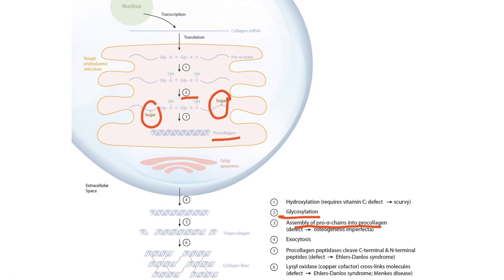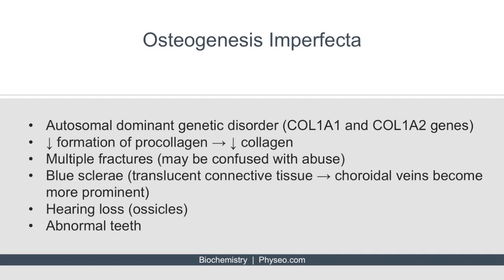Defects in the formation of the triple helix can result in osteogenesis imperfecta. Osteogenesis imperfecta is an autosomal dominant genetic disorder most commonly caused by a defect in the COL1A1 and COL1A2 genes, resulting in decreased formation of pro-collagen. These patients commonly present with multiple fractures during childhood, which can be confused with abuse. They may also have blue sclerae, hearing loss due to affected ossicles, and abnormal teeth due to lack of dentin.